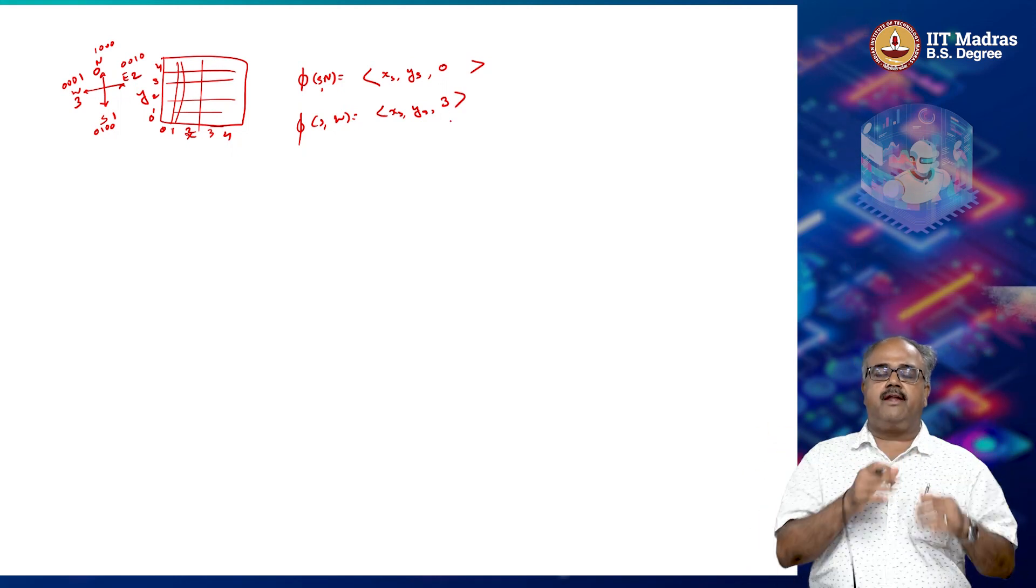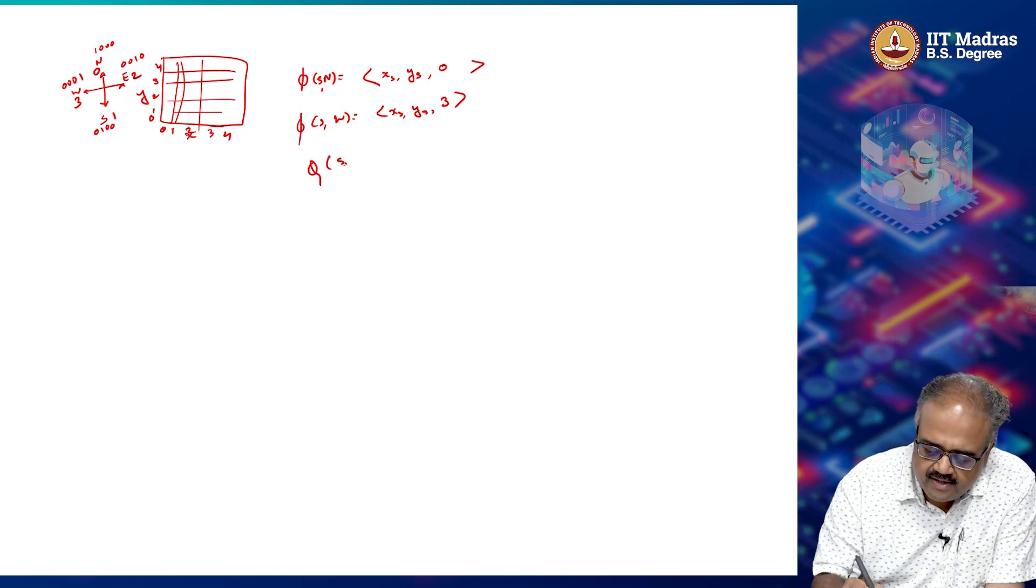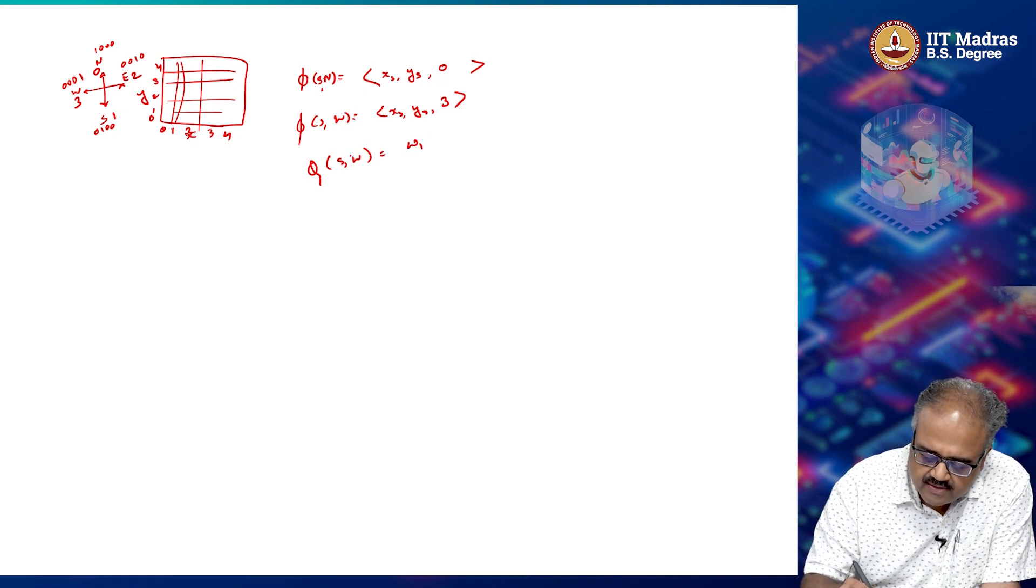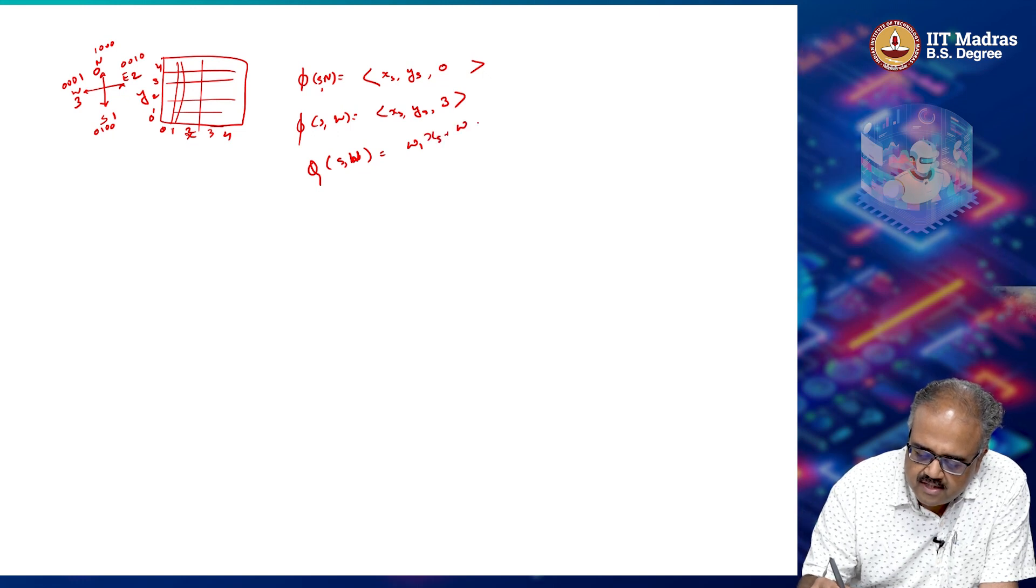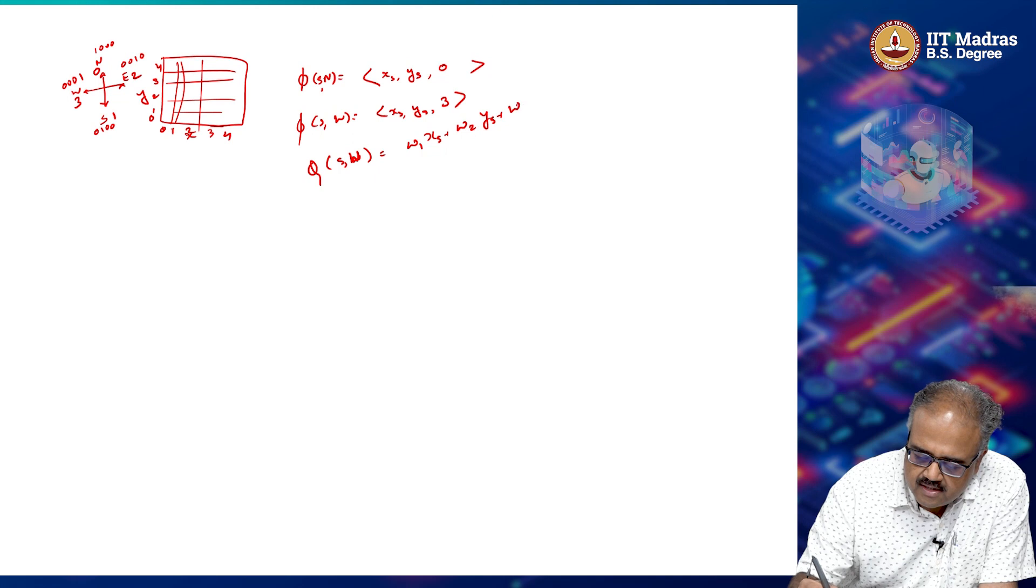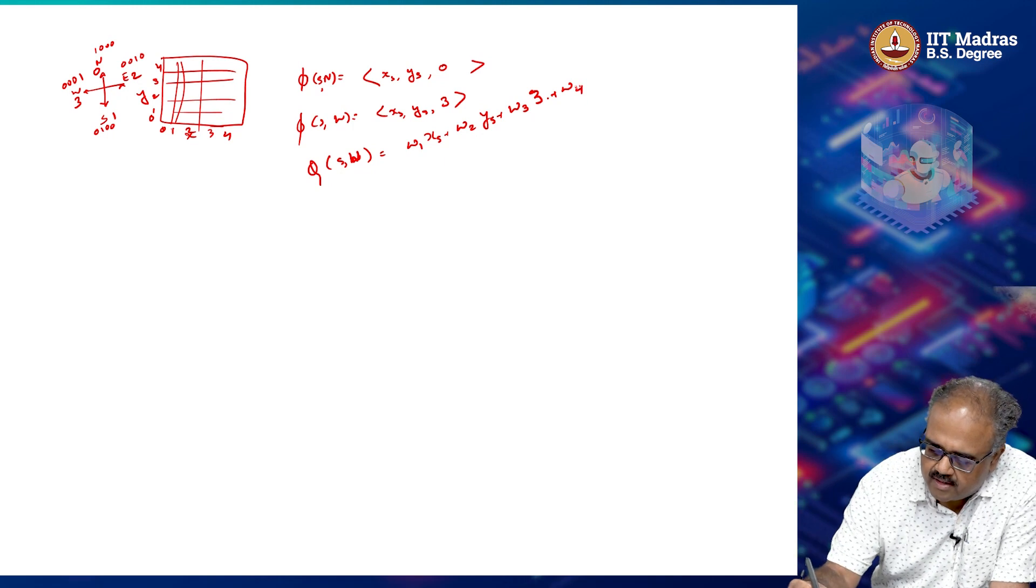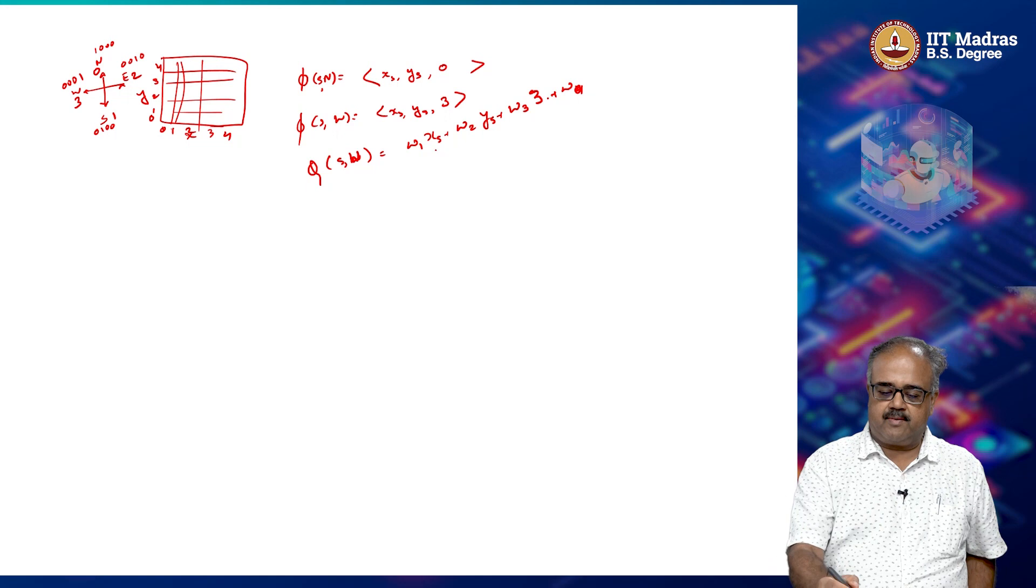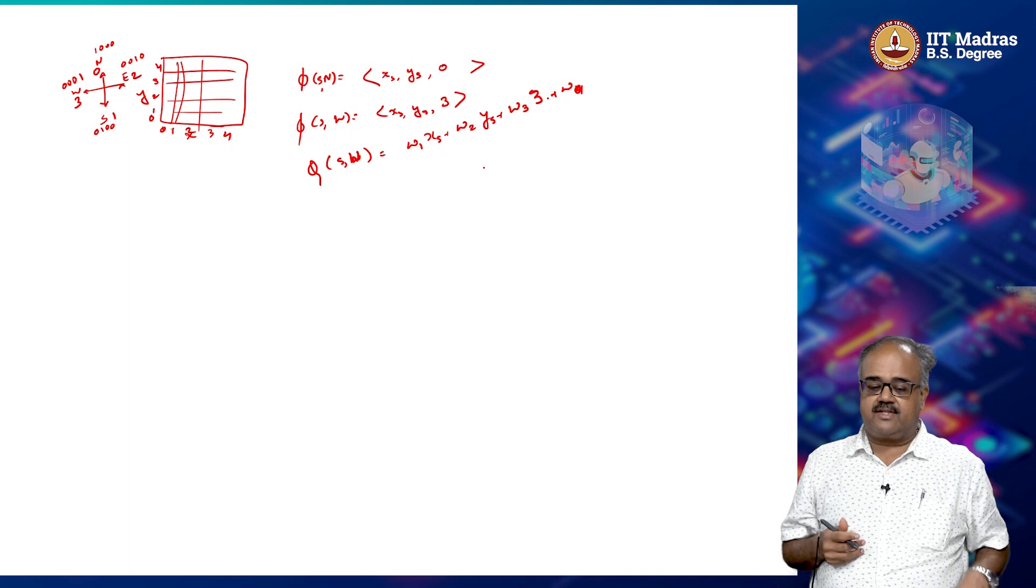Now I will feed this phi into my linear function approximator. So my q of s comma w would be, w here is west, w 1 x s plus w 2 y s plus w 3 into 3 plus some w naught that gives me the bias. So I have my w naught plus w 1 x s plus w 2 y s plus w 3 into 3.